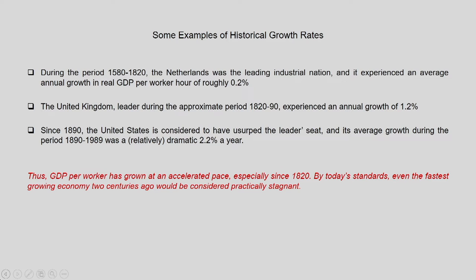Note that these figures refer to GDP per worker hour, essentially labor productivity, rather than the GDP per capita we use today. The United Kingdom, the leading economically growing country during 1820 to 1990, was experiencing annual growth of about 1.2 percent — very low compared to current rates. Since around 1890, the United States usurped the leader's seat, with an average growth rate of about 2.2 percent over the period 1890 to 1989.